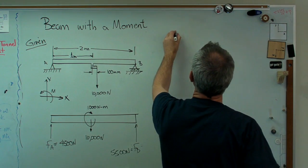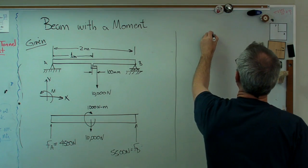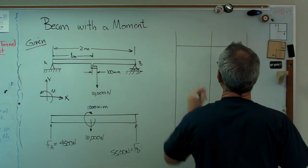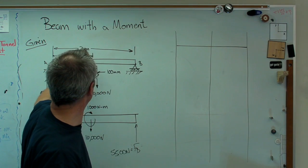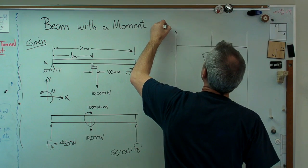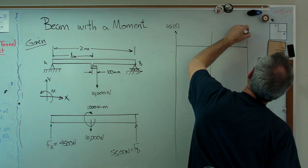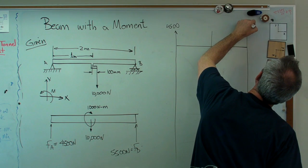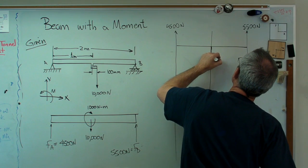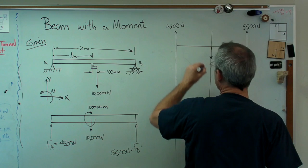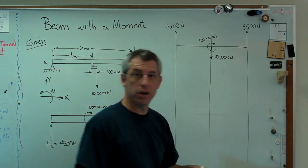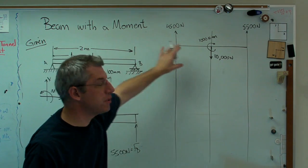Now load shear moment diagram. Real easy here. Let's just draw our three lines that we're going to need. So first part's going to be load. That's easy. We just take the loads that are over here and write them again over there. So that's going to be 4,500 newtons. That's going to be 5,500.